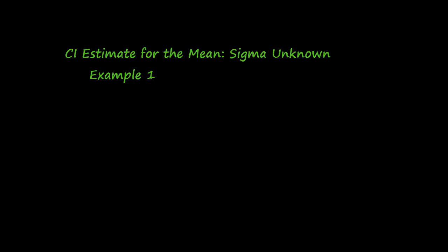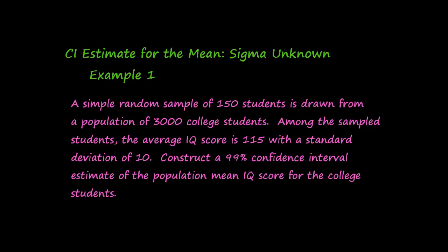Now we'll work an example where we construct a confidence interval estimate for the mean when the population standard deviation sigma is unknown. A simple random sample of 150 students is drawn from a population of 3,000 college students. Among the sampled students, the average IQ score is 115 with a standard deviation of 10. Construct a 99% confidence interval estimate of the population mean IQ score for the college students.